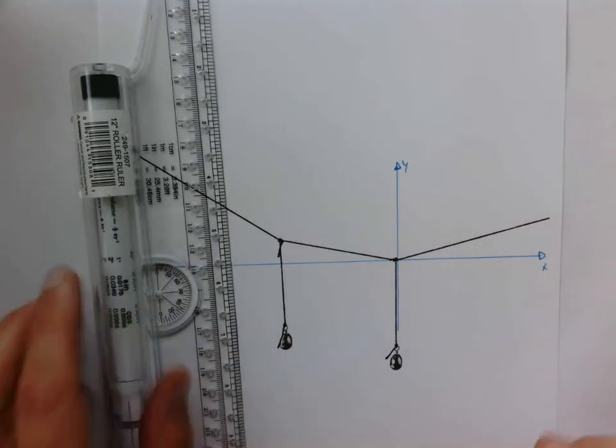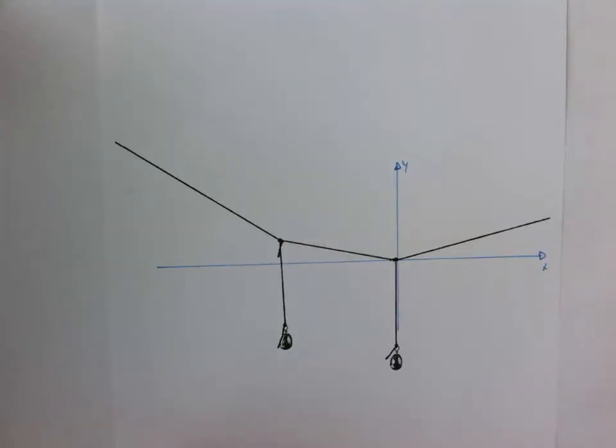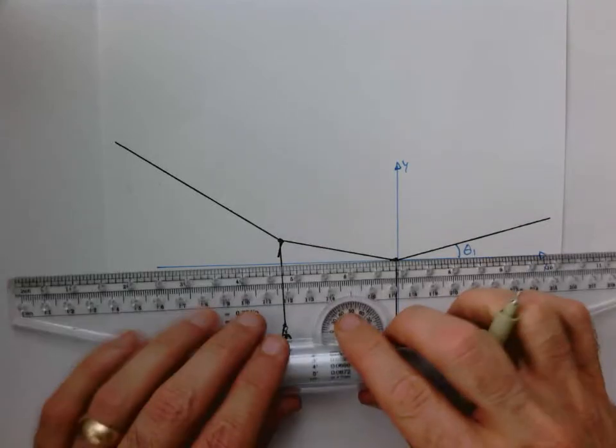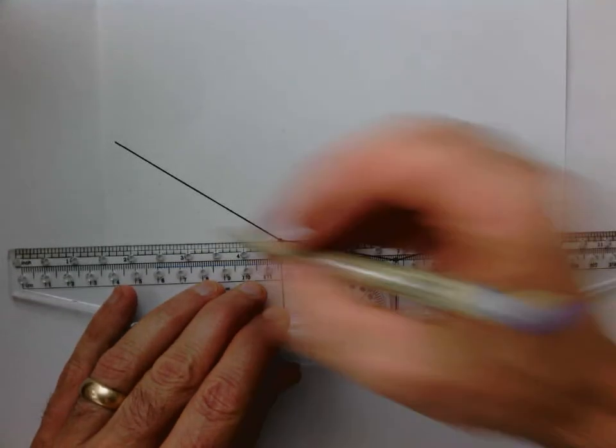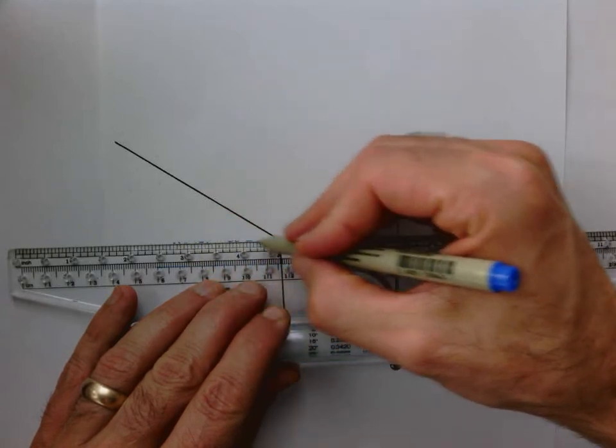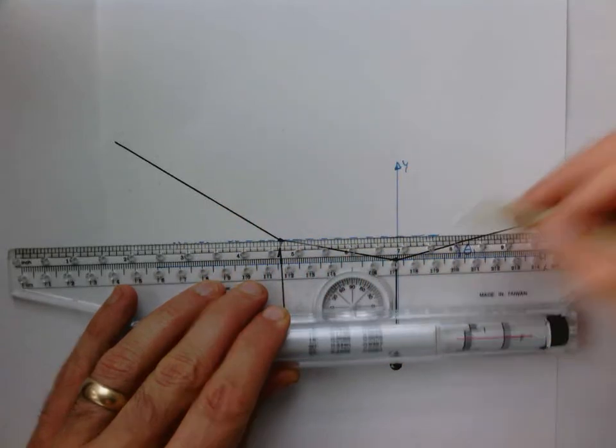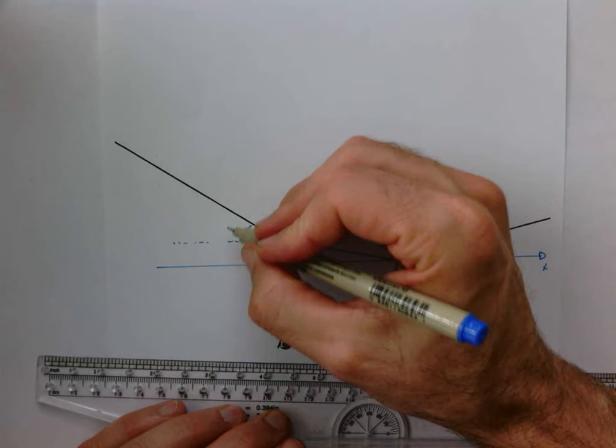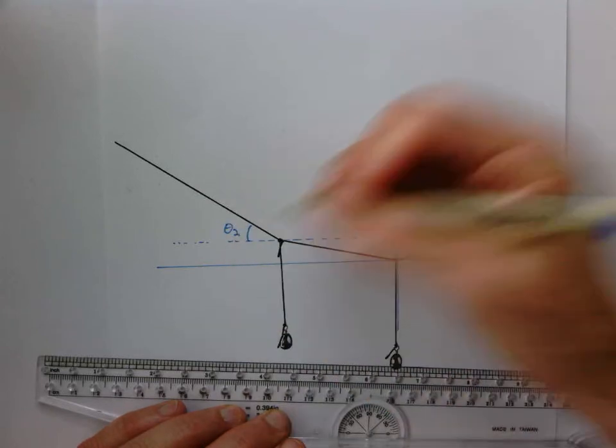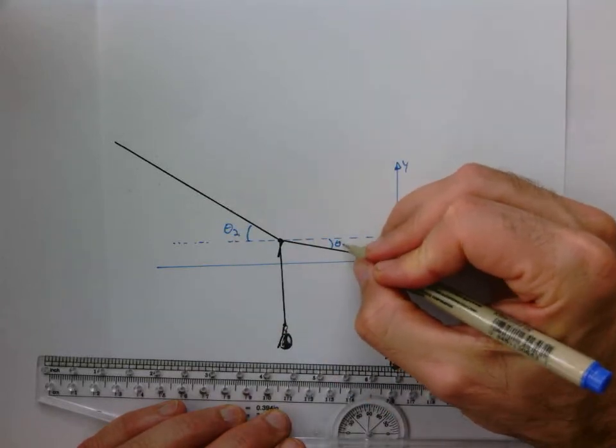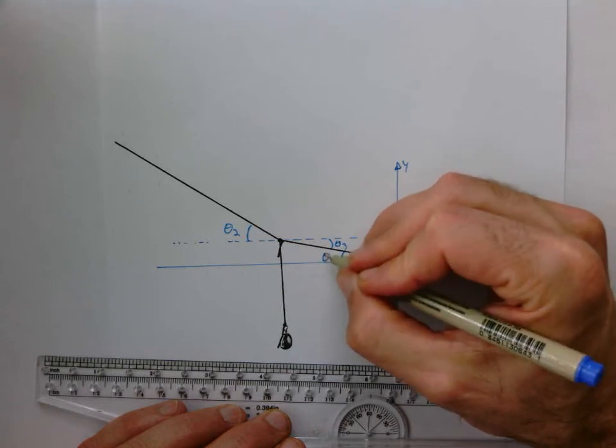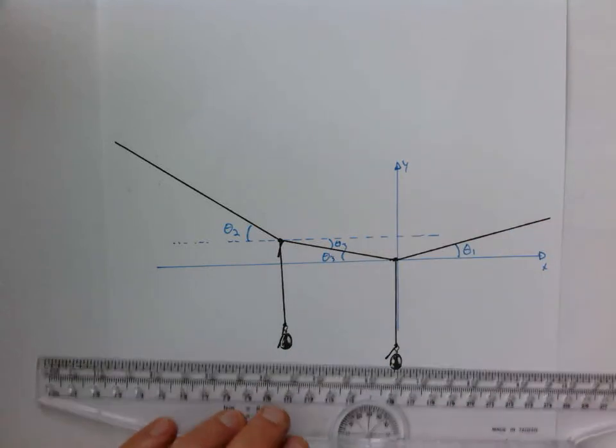And now I'm going to have three angles that I have to worry about. I'm going to call this angle θ1. Let's put a dashed line here just so we can see where the x-axis lies. I'll call this angle θ2, and this angle which is the same whichever way we look at it is θ3.